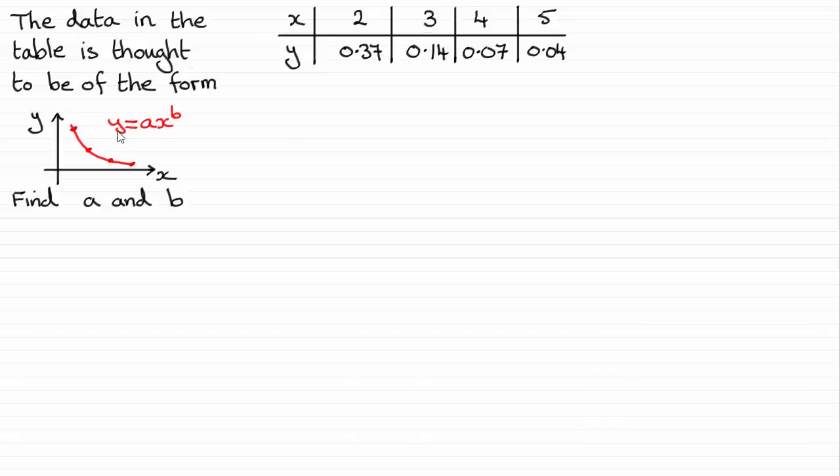So I'm going to choose to take logs to base 10 to both sides. So that will be this line here, where we've got log of y equals the log of ax to the power b. Now I'm going to split this up by using the addition rule. We've got a times x to the power b. So that's going to be the same as the log of a plus log of x to the power b.